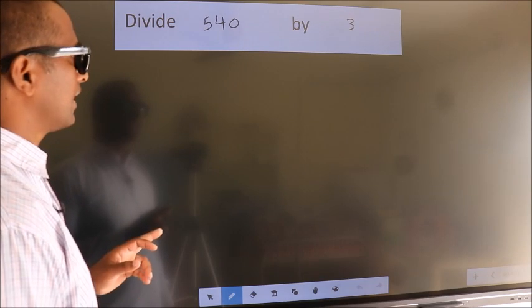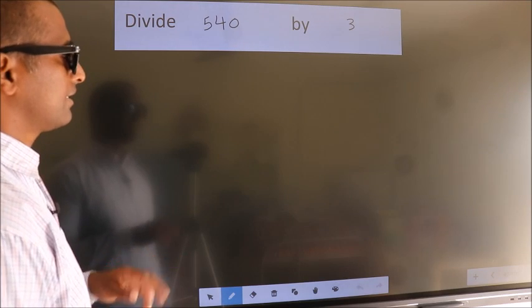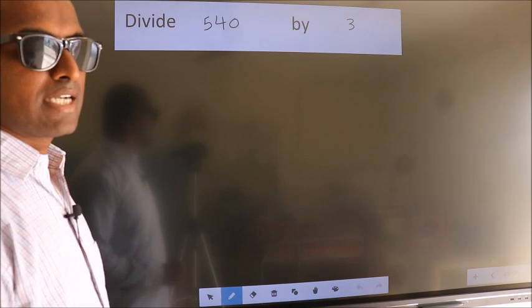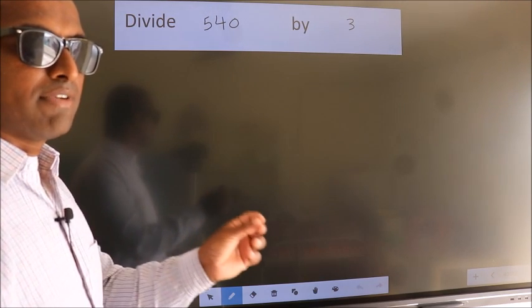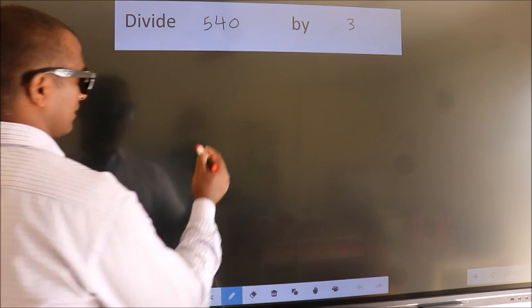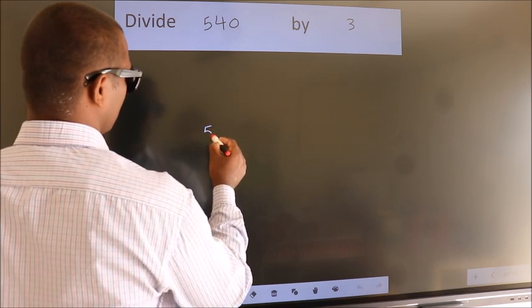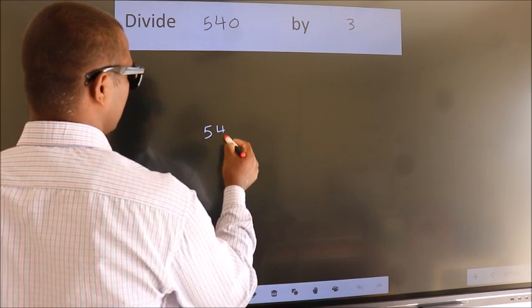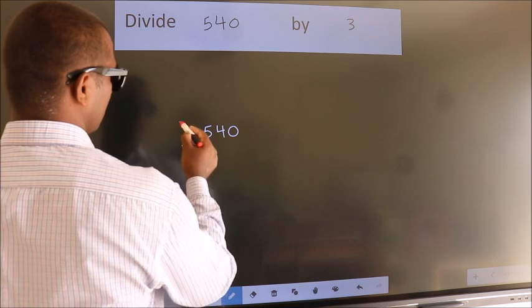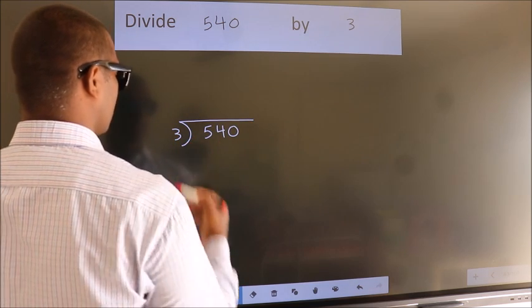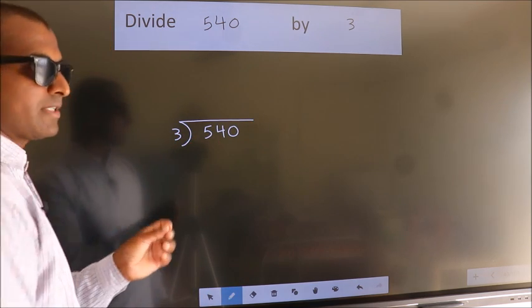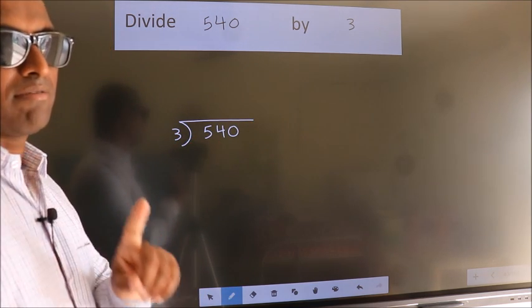Divide 540 by 3. To do this division, we should frame it in this way: 540 here, 3 here. This is your step 1.